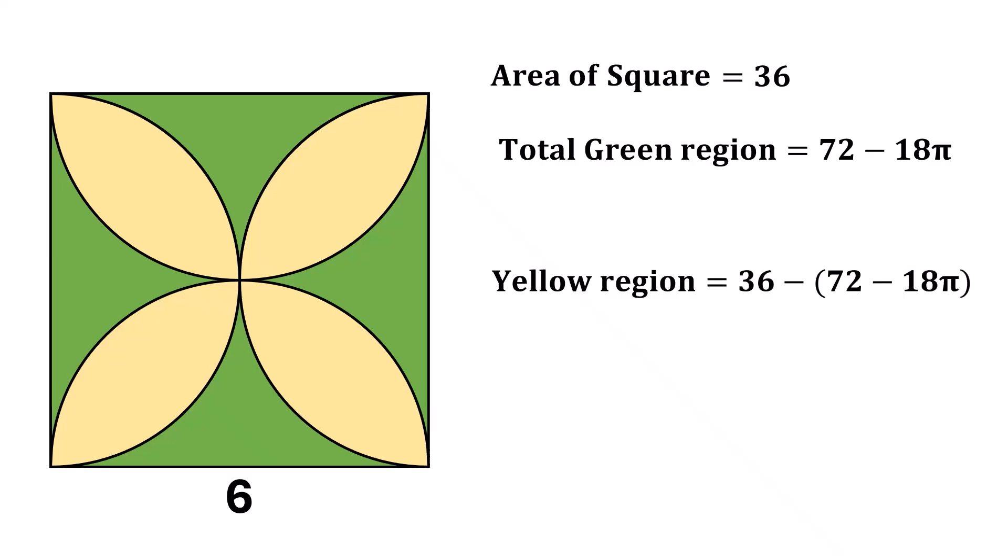which becomes 36 minus 72 plus 18 pi. And that is 18 pi minus 36. And that is our answer.